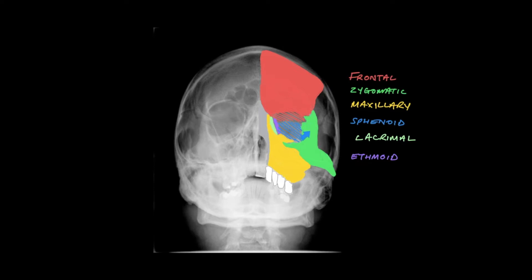The lateral orbital wall receives a large amount of its bony covering from the zygomatic bone, which has its typical elephant trunk appearance as it heads laterally. The sphenoid wing also contributes to the lateral orbital wall, and it's here, shaded in blue.